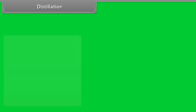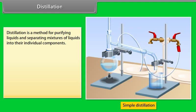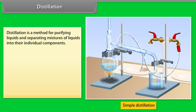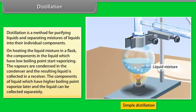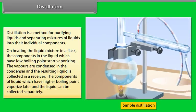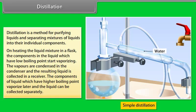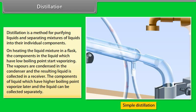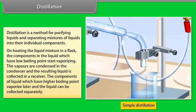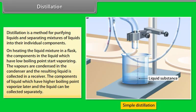Distillation is a method for purifying liquids and separating mixtures of liquids into their individual components. On heating the liquid mixture in a flask, the components with low boiling point start vaporizing. The vapours are condensed in the condenser and the resulting liquid is collected in a receiver. Components with higher boiling points vaporize later and can be collected separately.